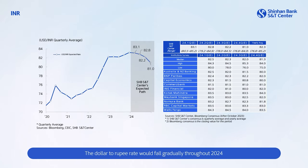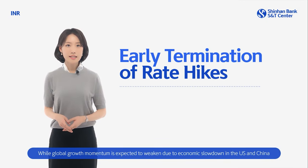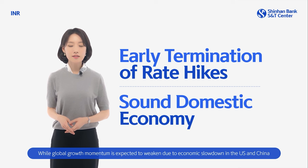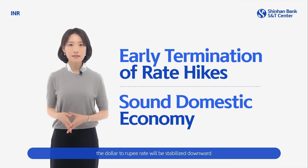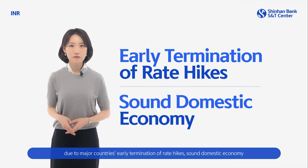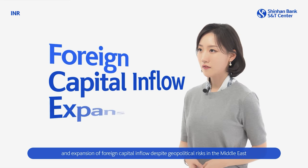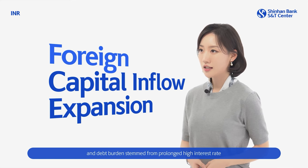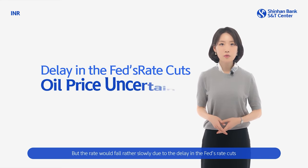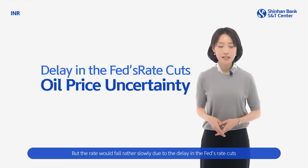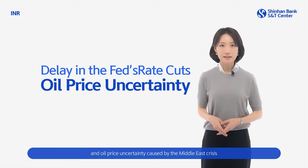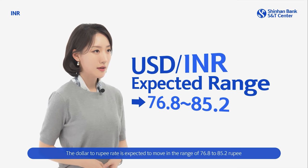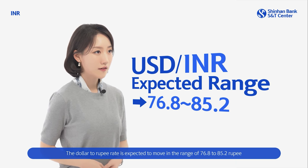The dollar-to-rupee rate would fall gradually throughout 2024 as the strong U.S. dollar trend eases on the Fed's rate hike cease and a slowdown in India's inflation. While global growth momentum is expected to weaken due to economic slowdown in the U.S. and China, the dollar-to-rupee rate will be stabilized downward due to major countries' early termination of rate hikes, a sound domestic economy, and expansion of foreign capital inflow, despite geopolitical risk in the Middle East and debt burden stemmed from prolonged high interest rates. But the rate would fall rather slowly due to the delay in the Fed's rate cuts and oil price uncertainty caused by the Middle East crisis. The dollar-to-rupee rate is expected to move in the range of 76.8 to 85.2 rupee.